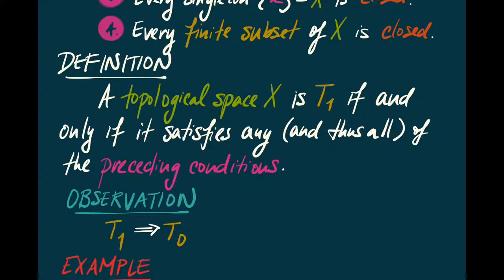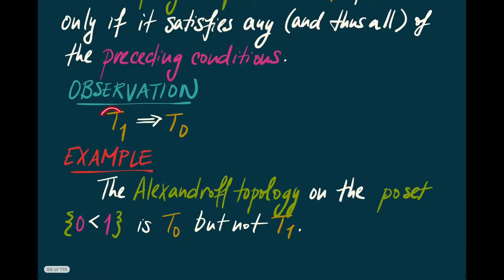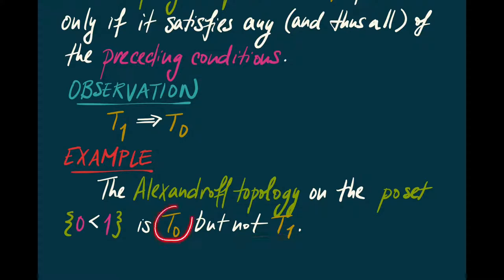So T0 and T1 are bedrock conditions that support the rest of the conditions we want to contemplate — sort of minimal niceness conditions. If a topological space is T1, then it's automatically T0, but the converse isn't true. For example, if we take the Alexandrov topology on the poset {0, 1}, the topology is rigged so that {1} is open and {0} is closed, but not the other way around. So this is not T1, but it is indeed T0.